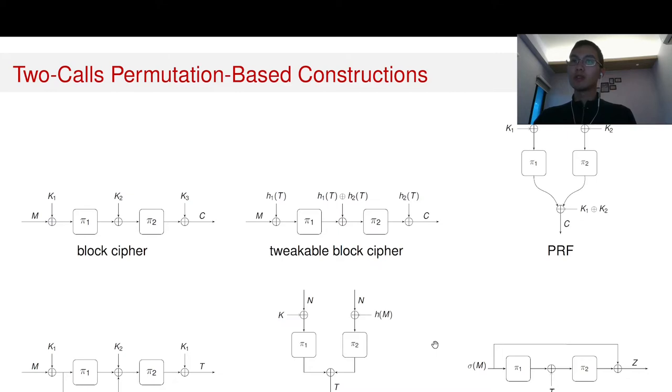We see all those constructions are built on two public permutations. The reason for this is because this is the minimum number of primitive evaluations needed to achieve beyond-birthday security.